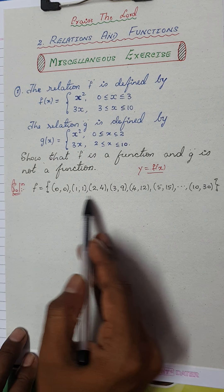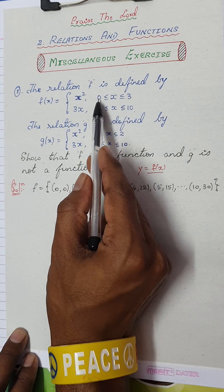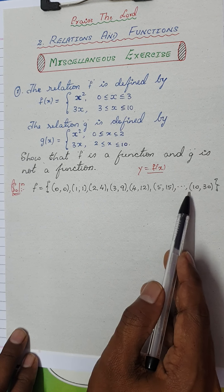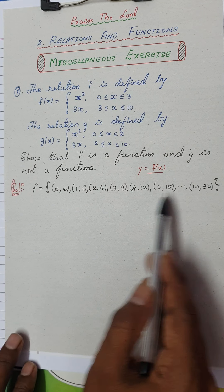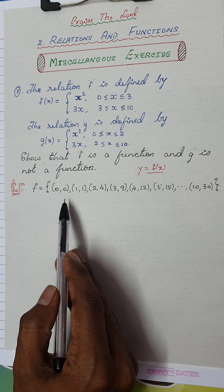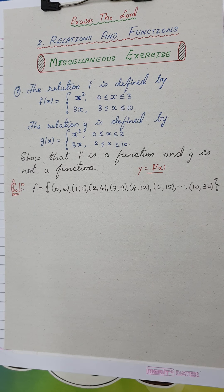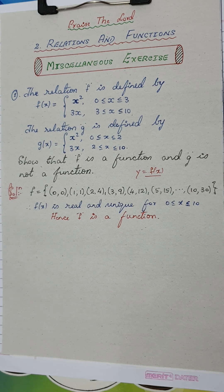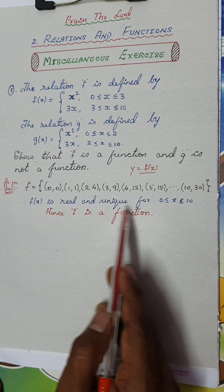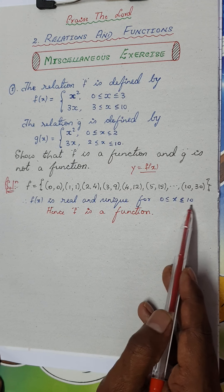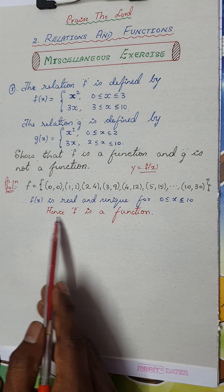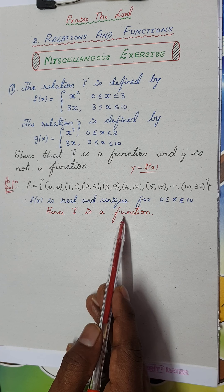You can see that every element from 0 to 10 has an image, and every element has a unique image. This satisfies the condition for a function. The conclusion: f(x) is real and unique for all values of x from 0 to 10. Hence f is a function.